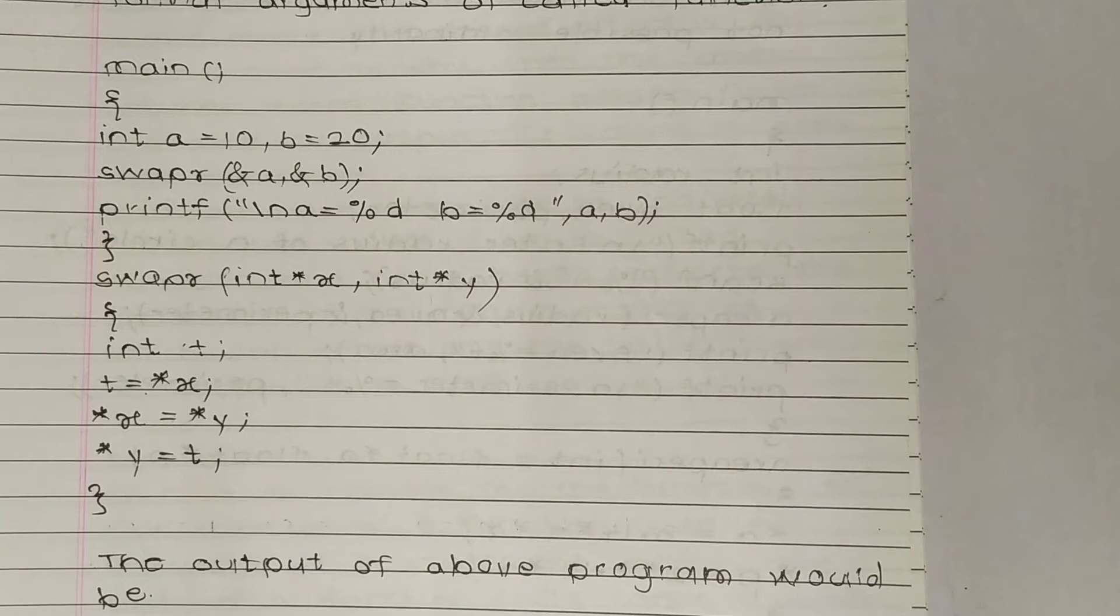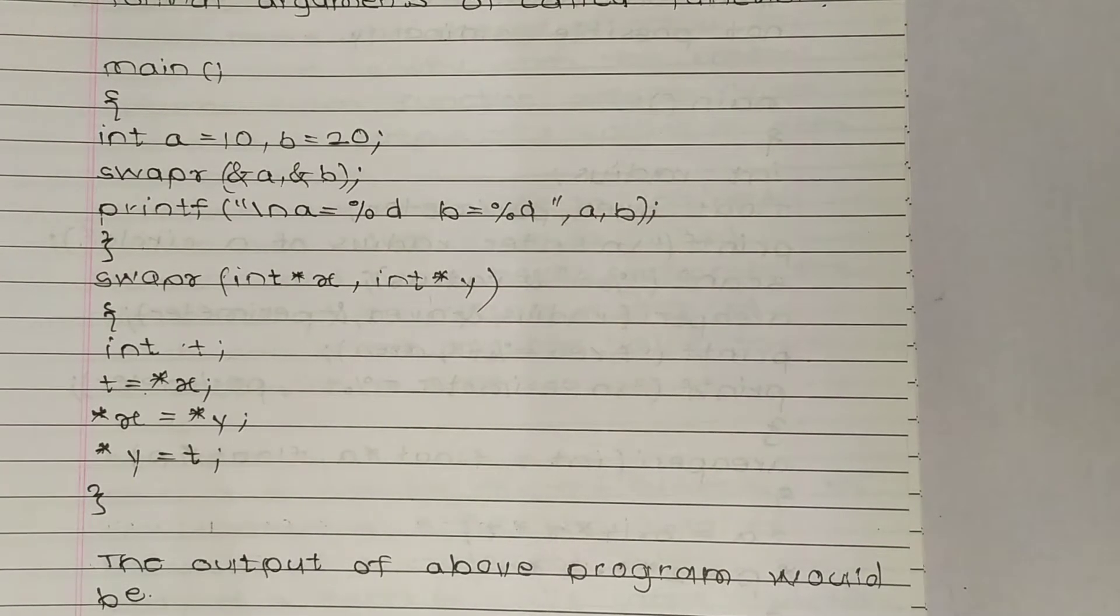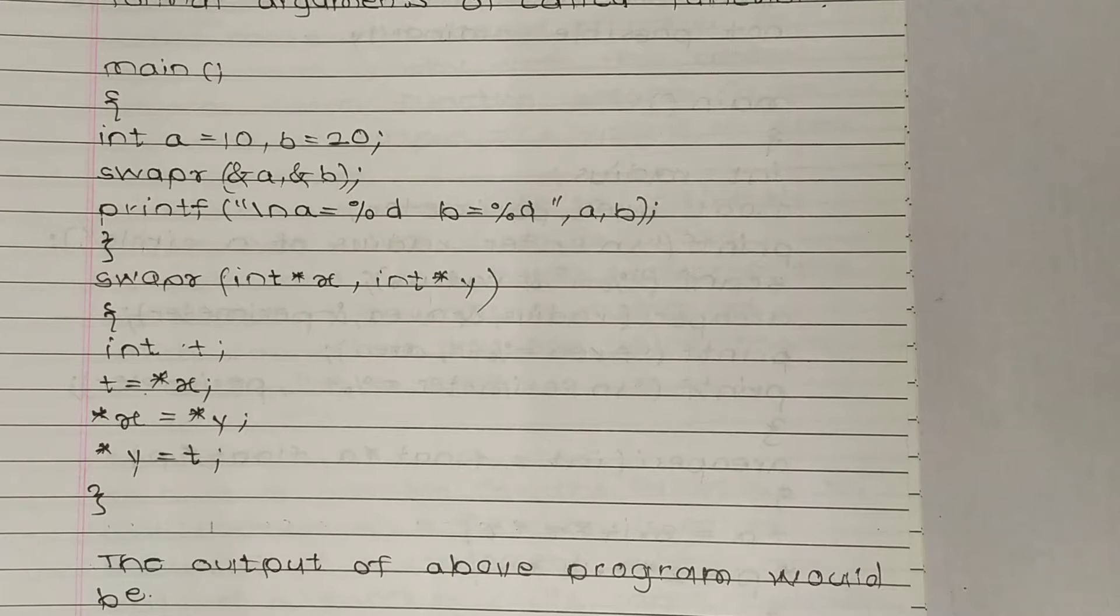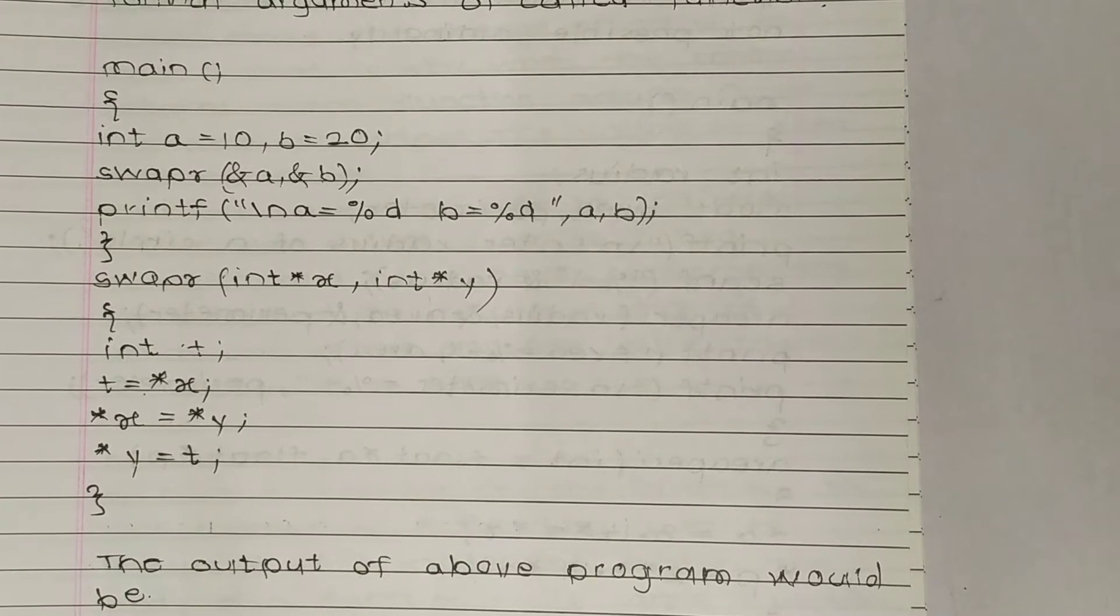In main, int a=10, b=20. So a and b are integers. Then swap(&a, &b) - the swap function is called for swapping the addresses.